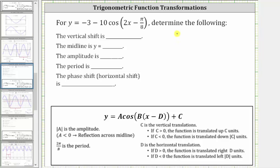For the given cosine function, we're asked to determine the vertical shift, midline, amplitude, period, and phase shift or horizontal shift.